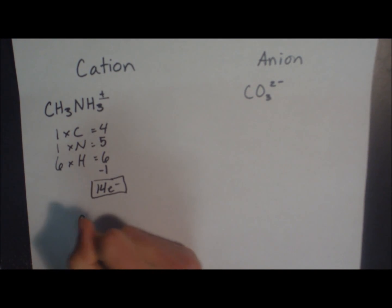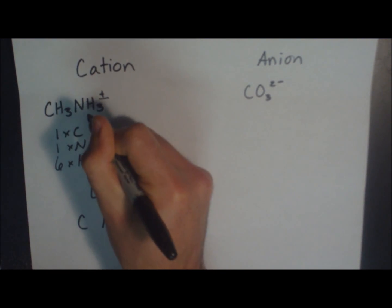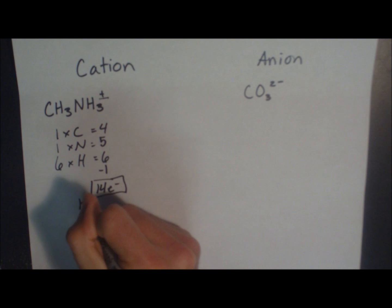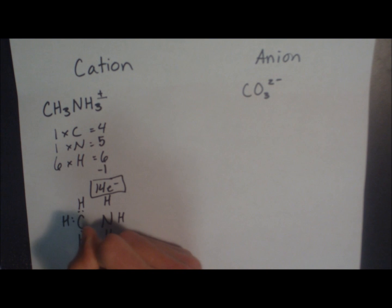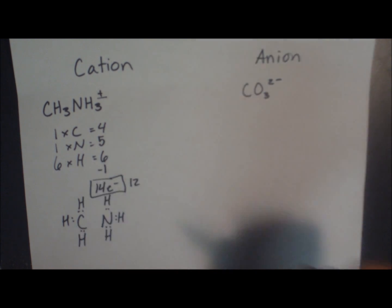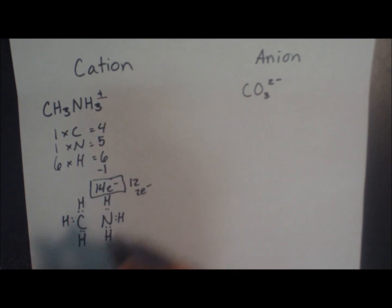Otherwise, we do the exact same thing. We're going to draw our base in. Each carbon and the nitrogen have 3 hydrogens around it. Each hydrogen has 2 electrons. 2, 4, 6, 8, 10, 12. We've used 12, we only have 2 electrons to go. The carbon and the nitrogen have to be connected somehow. There, that's it.